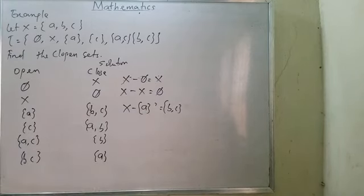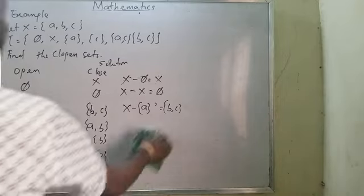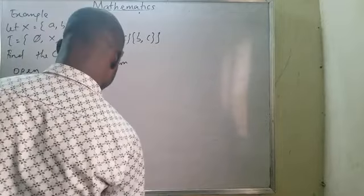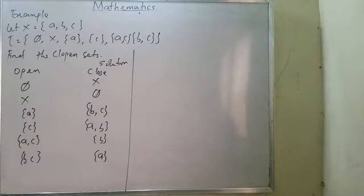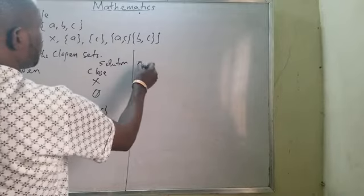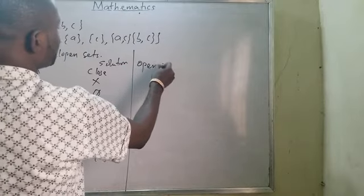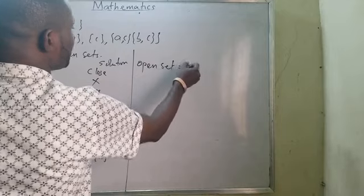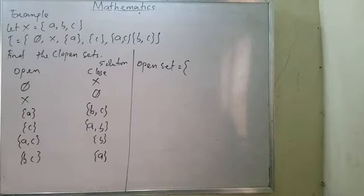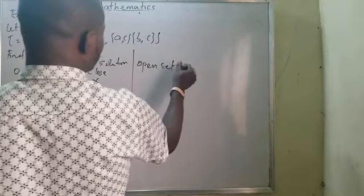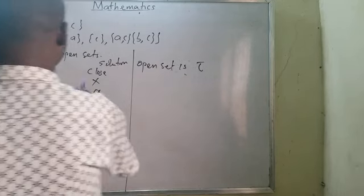Since I have the complements, I can now state that my open sets are exactly the elements of the topology τ. Look at the elements in τ — those are my open sets.